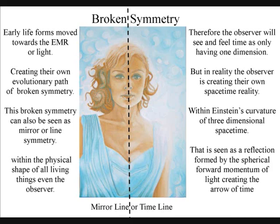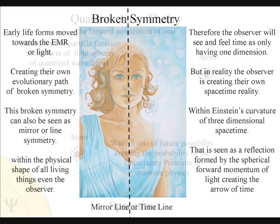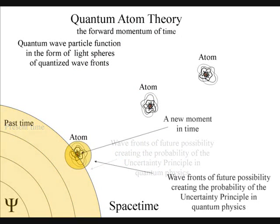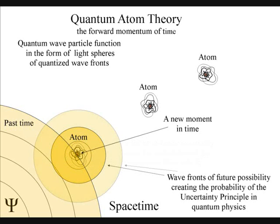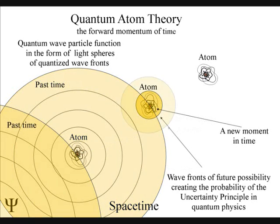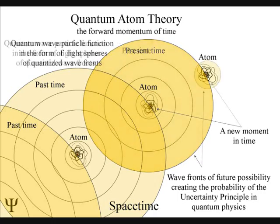To understand this we have to first look at how time is formed and the part we play in its formation. In this theory, the emission and absorption of light from one atom to another creates a forward motion of time. Each individual atom of our universe creates its own spacetime geometry relative to its position and momentum.